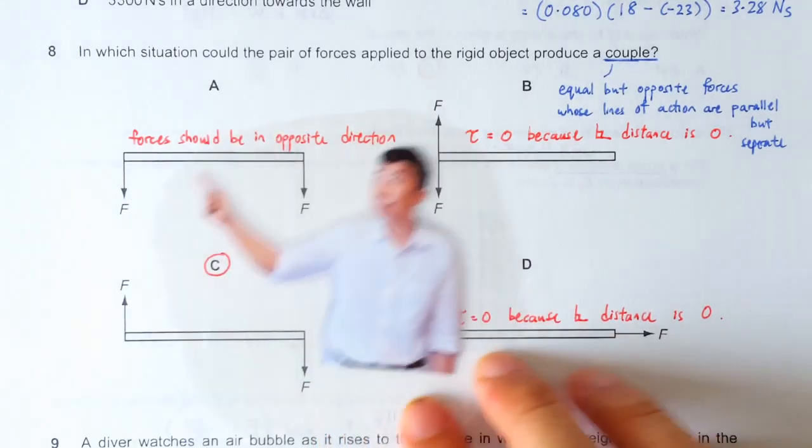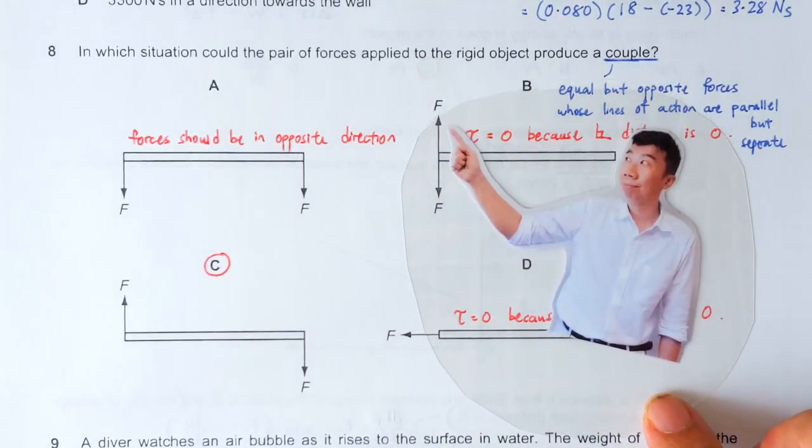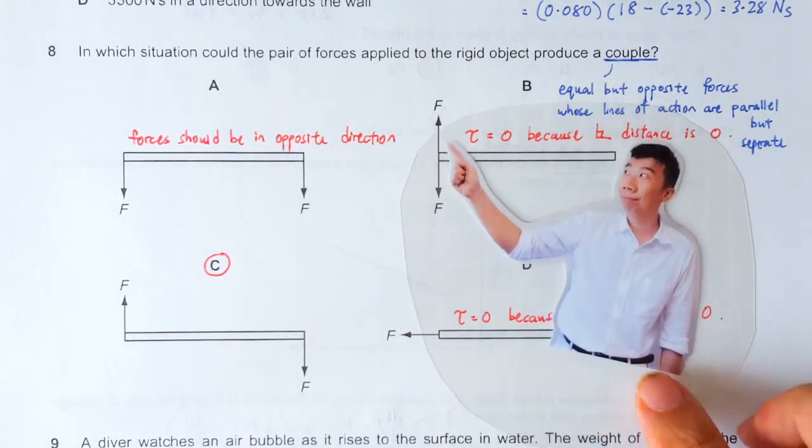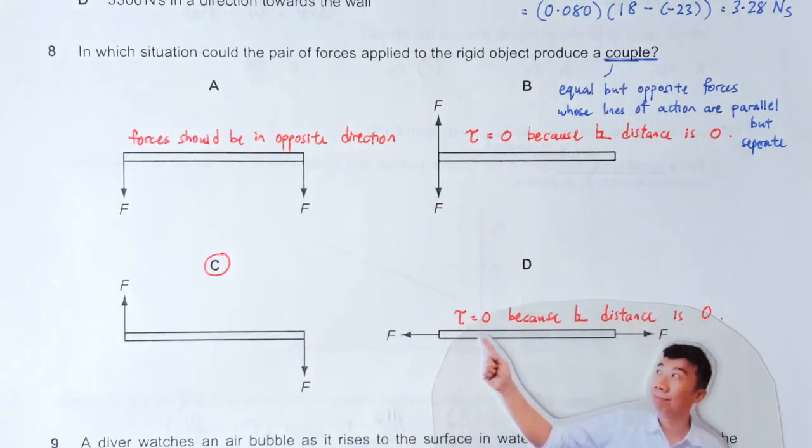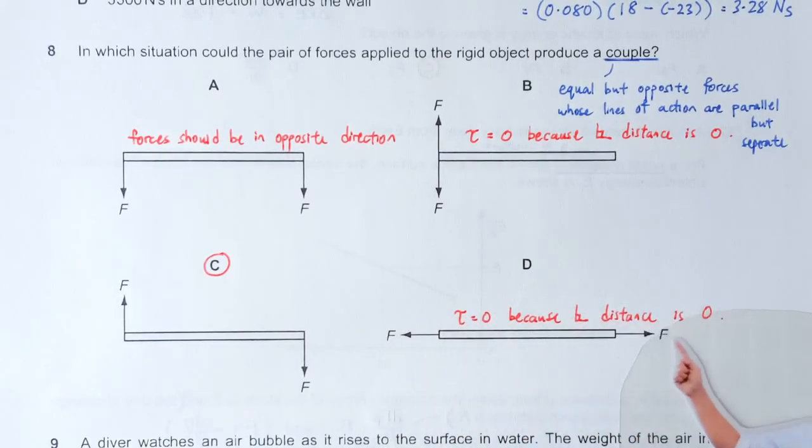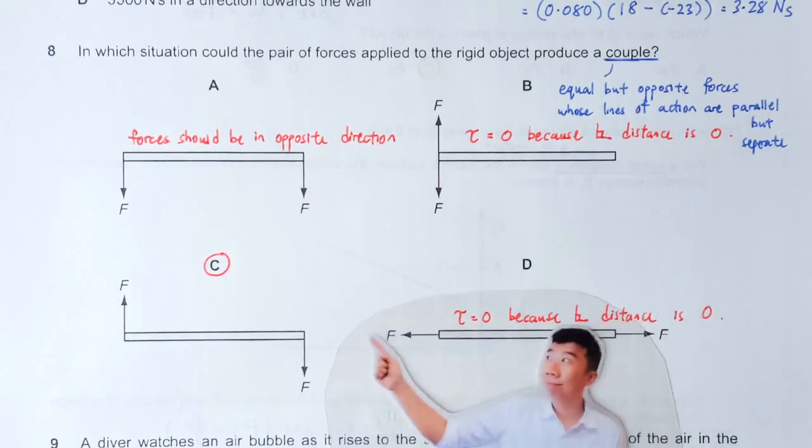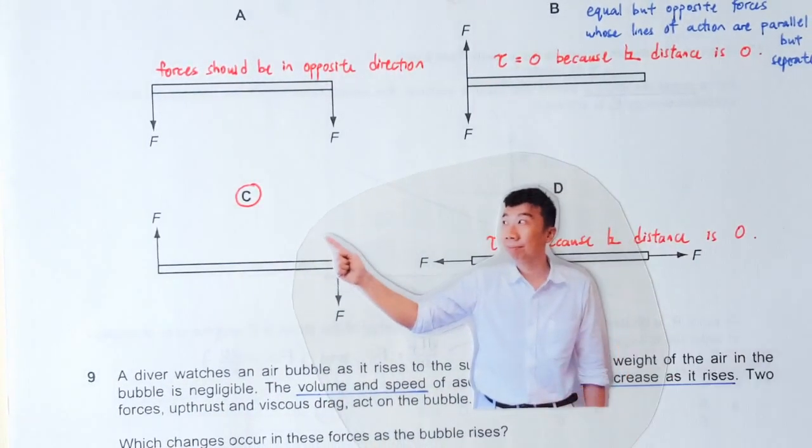That's totally not a couple. In these two cases, we do have a pair of equal but opposite forces, but the lines of action coincide - there's no separation. Likewise here, there's no separation between the lines of action. This guy's line of action is this, this guy's line of action is also this, so that's not a couple. This rod is not going to rotate because of these two forces.